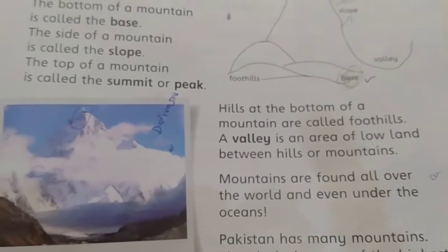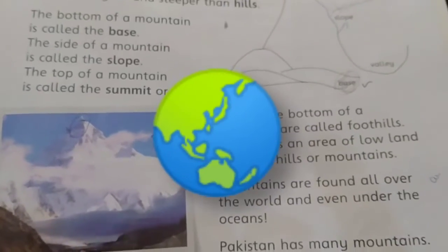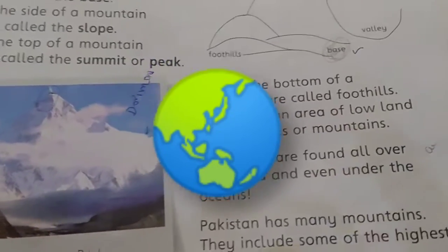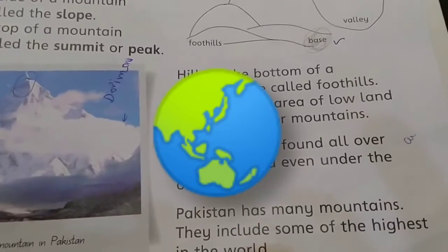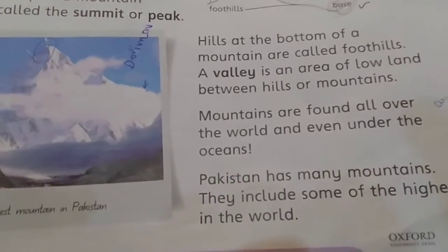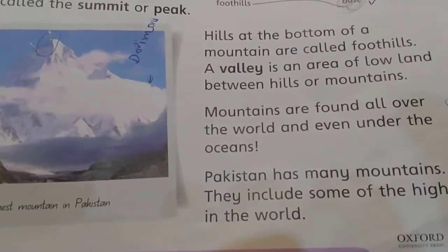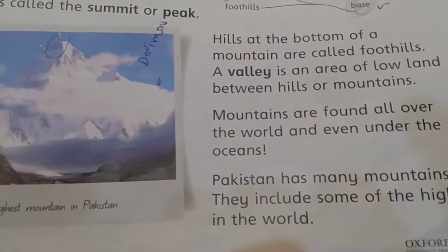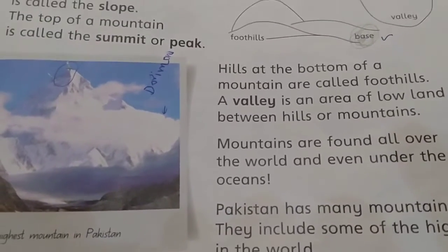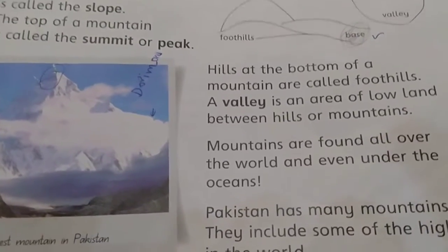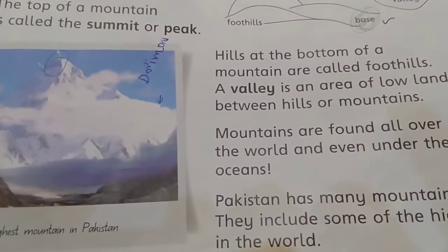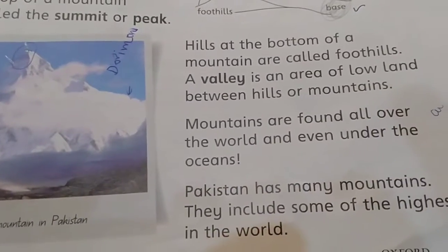A valley is an area of lowland around the mountains. Mountains are found all over the world and even under the ocean. Almost 70 percent of the Earth's surface is covered by oceans.